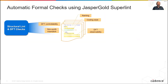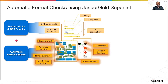For automatic formal checking, designers should start by using Jasper Gold Superlint. Comprehensive structural and DFT checks are provided, such as coding style, sim-synth mismatch, and DFT controllability and observability. Superlint builds upon these structural checks by creating automatic formal checks based on your RTL. Using these checks, Superlint can identify behavioral problems such as arithmetic overflow, dead code, and FSM livelock and deadlock.